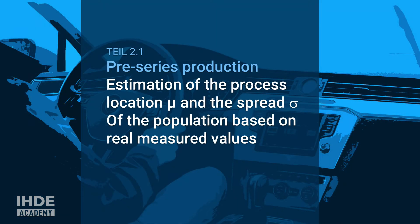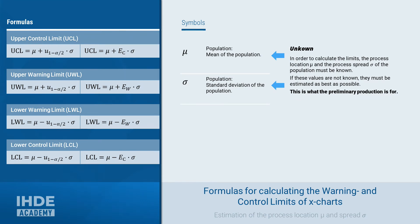To calculate the limits of a quality control chart, the process mean and the spread of the process must already be known. If these are not available from an ongoing series production, a small batch of parts is manufactured specifically to determine this data. In general, the limits are calculated from the mean value, a factor or multiplier, and the standard deviation. The purpose of the pre-series production is to determine the mean value and the standard deviation.